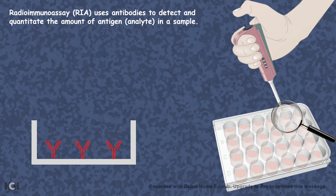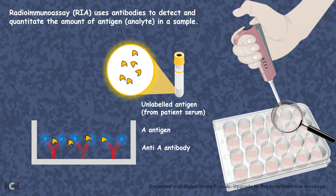First you coat the well with antibody against A, or anti-A. Then you add radio-labeled antigen A, or any other kind of labeled antigen A. Lastly you add patient serum or patient body fluid, which is expected to have antigen A — and that's the question: whether the patient serum has antigen A or not. That's the thing you want to detect.